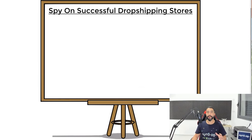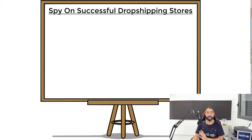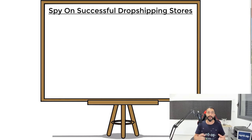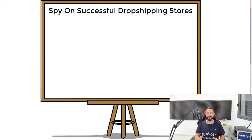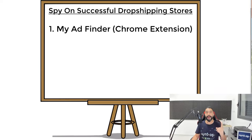In the previous lesson, we went over the six criteria you need to know before starting your product research. In this lesson, you are going to learn exactly how you can find and spy on successful Shopify dropshipping stores. The reason you want to spy on other people's successful stores is because it will give you an idea of how successful stores are supposed to look, and more importantly, you will be able to know exactly which products inside those stores are selling. This is a secret method that nobody is talking about, but we are more than happy to share this valuable information with you. The first method is using an extension called My Ad Finder.